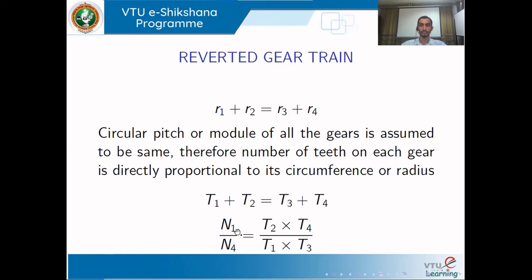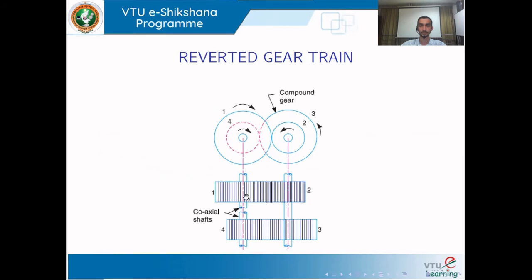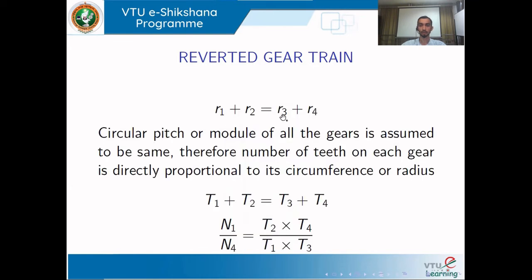For finding the velocity ratio of the reverted gear train, since the center distance between the shafts is the same: r1 + r2 must equal r3 + r4. Assuming all gears have the same module — required for proper meshing — the pitch circle radius is directly proportional to the number of teeth, so this condition becomes: T1 + T2 = T3 + T4.